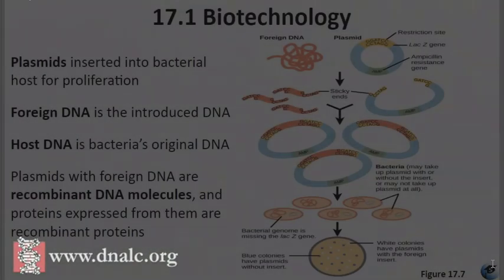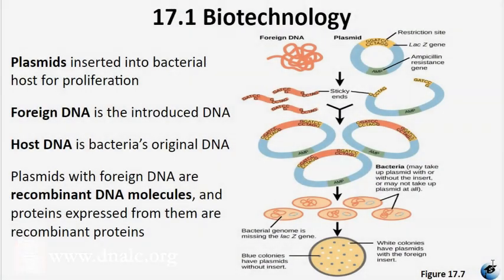Reproductive cloning involves creating an exact copy of a multicellular organism. To achieve this, they start by replacing the haploid nucleus of an egg with a diploid nucleus from the organism they want to clone. Once that's done, the egg cell develops into a zygote as if it had been fertilized normally. The resulting organism that grows from the zygote is a genetic clone of the original organism with identical genetic information.